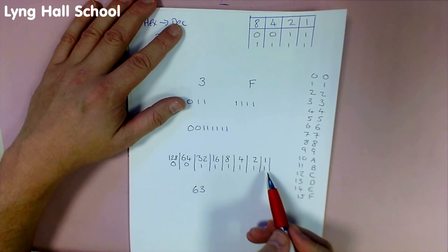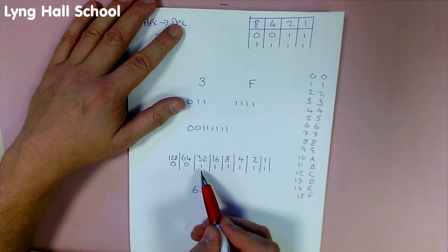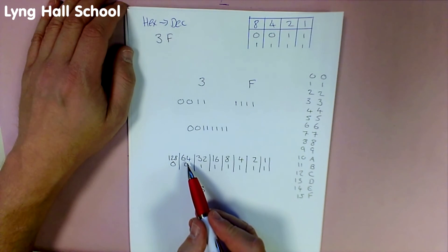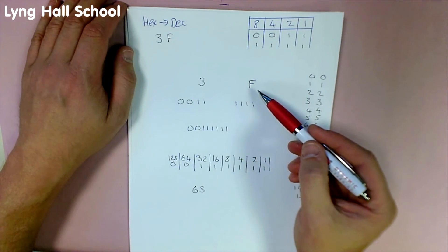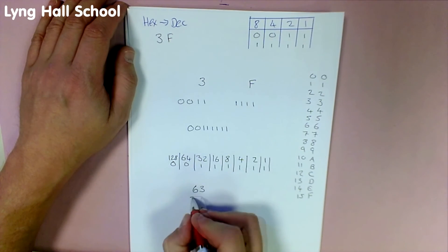This was made slightly easier by the fact there are all ones here, meaning it is one less than the column to the left. So our answer here, converting 3F to decimal, is 63.